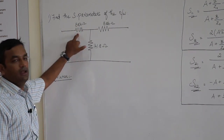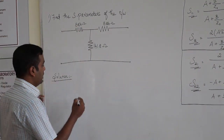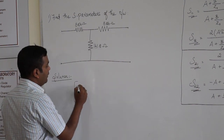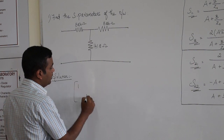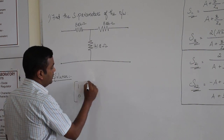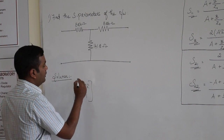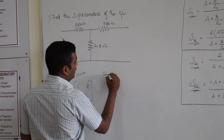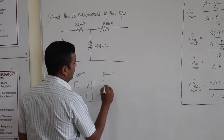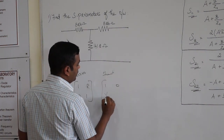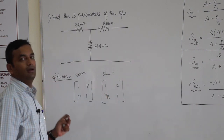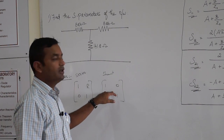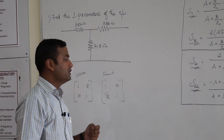This element is connected in series. If you recall your ABCD matrix: for an element connected in series, the matrix is [1, R; 0, 1]. For an element connected in shunt, the matrix is [1, 0; 1/R, 1]. This is the ABCD matrix for a series-connected element and for a shunt-connected element.